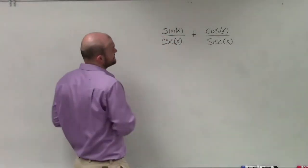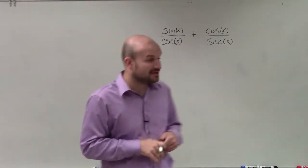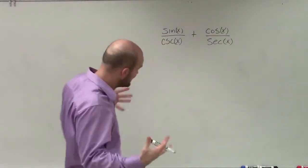Welcome. So in this case, we have sine of x divided by cosecant of x plus cosine of x divided by secant of x.